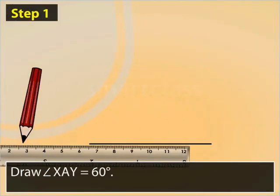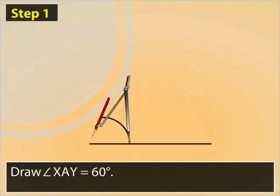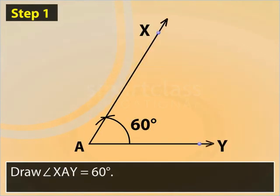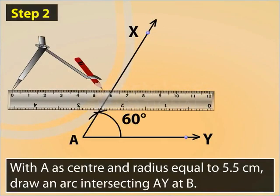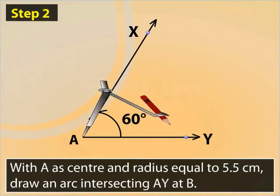First, draw an angle XAY measuring 60 degrees. With A as center and radius equal to 5.5 cm, draw an arc intersecting AY at B.